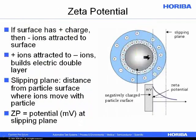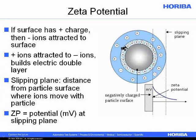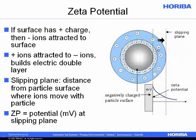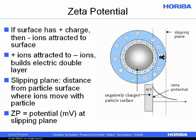The zeta potential is the charge on the surface of the particle. Here is a particle with a negatively charged surface — if we put that into a suspension with ions, positive ions will be attracted to the negative surface. Then negative and positive ions will be attracted to these ions, and we'll end up with a double layer around the surface of those particles. The zeta potential is the charge measured in millivolts at a distance called the slipping plane — at that distance, these ions move with the particle as the particle moves through the suspension.